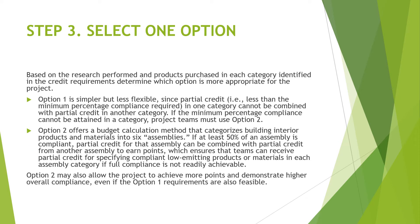Select one option based on the research performed and products purchased in each category. Option one is simpler but less flexible, since partial credit in one category cannot be combined with partial credit in another. If the minimum percentage compliance cannot be attained in a category, project teams must use option two. Option two offers a budget calculation method that categorizes building interior products and materials into six assemblies. If at least 50% of an assembly is compliant, partial credit for that assembly can be combined with partial credit from another assembly to earn points. Option two may also allow the project to achieve more points and demonstrate higher overall compliance even if option one requirements are also feasible.